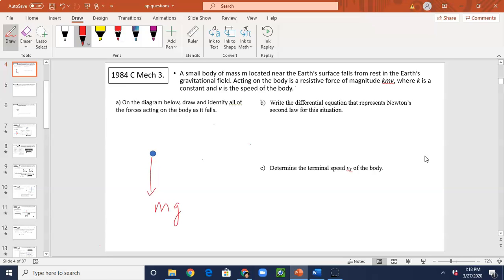In this case we also know there is a resistive force. The magnitude is KMV so there is upward force. It's called KMV and V is the speed. We know it's upward because it's resisting for it to fall.